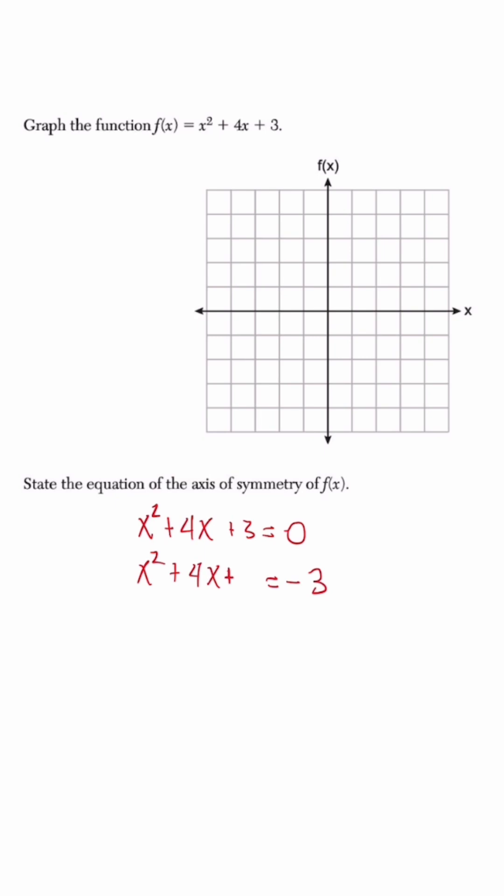We'll take half of the B term, which is 4, and square it to get 4. Add on both sides. So right side is equal to 1.